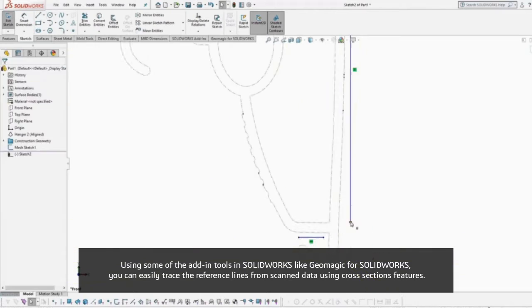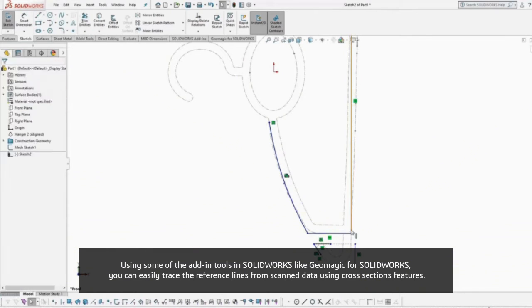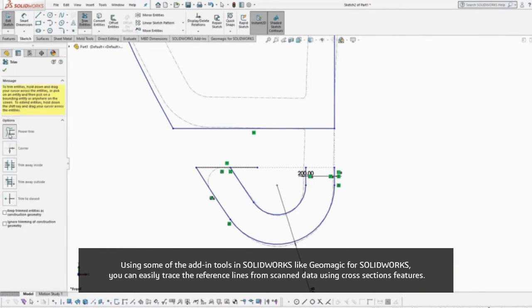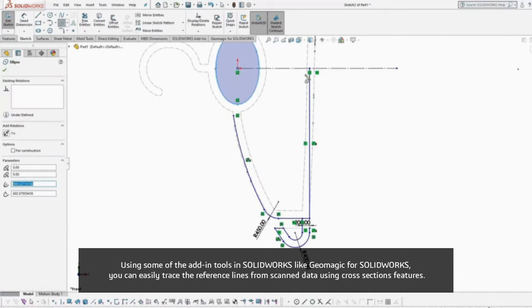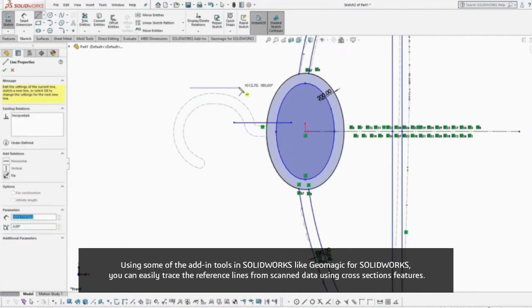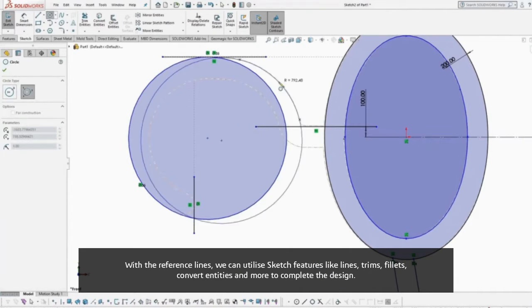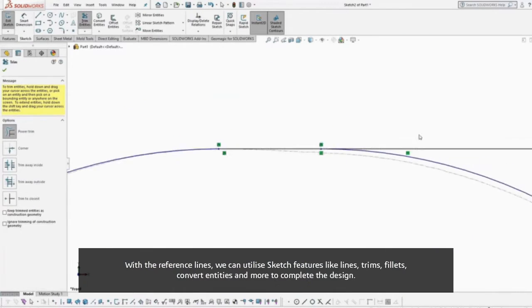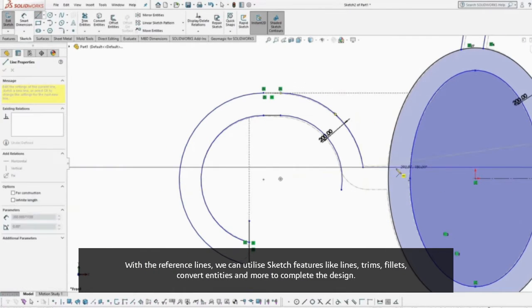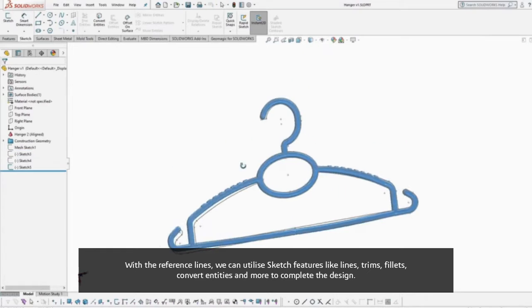Using some of the add-in tools in SOLIDWORKS like Geometric for SOLIDWORKS, you can easily trace the reference lines from scanned data using cross-section features. With the reference lines, you can utilize sketch features like lines, trims, fillets, convert entities and more to complete the design.